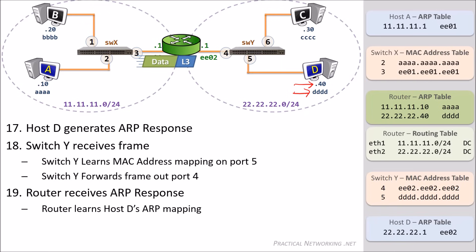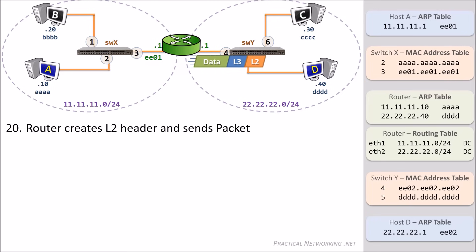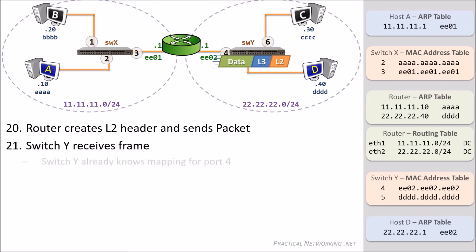The router will receive the ARP response and learn Host D's ARP mapping — specifically, that the IP address 22.22.22.40 correlates to the MAC address DDDD. Now the router has the information it needs to create the Layer 2 header to get the packet to its final destination. The router creates the Layer 2 header with a source MAC address of EEE02 and a destination MAC address of DDDD. Now the router can send the packet on its way. SwitchY will receive the frame on port 4, and since Switch Y already has that entry, it'll know to forward the frame out port 5.